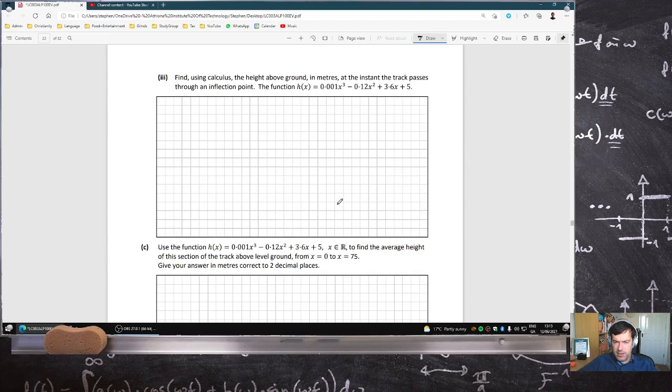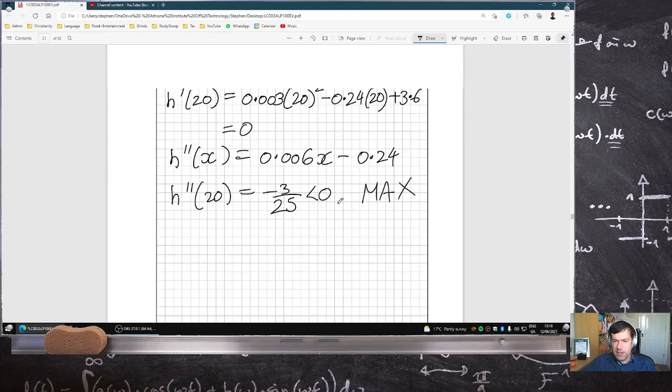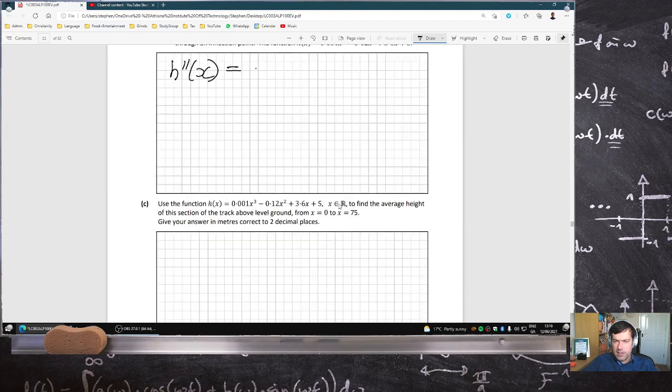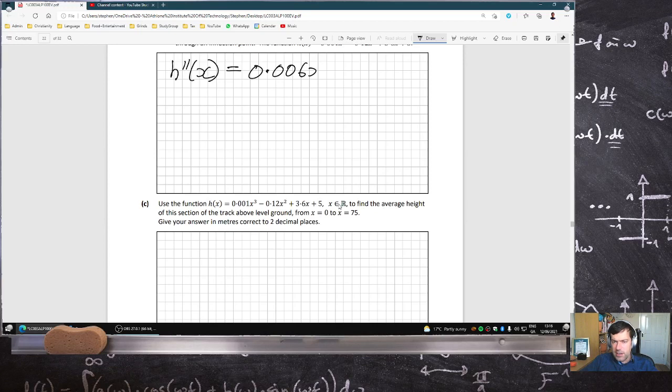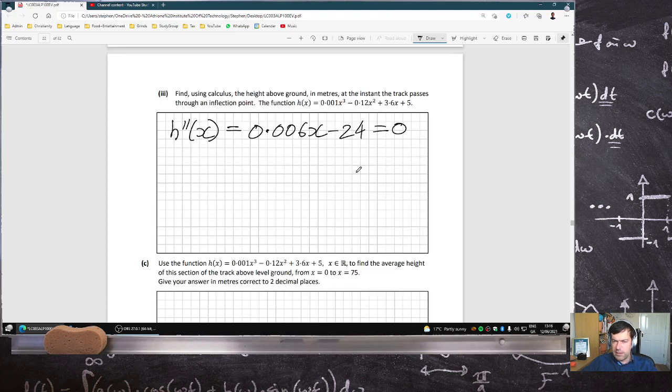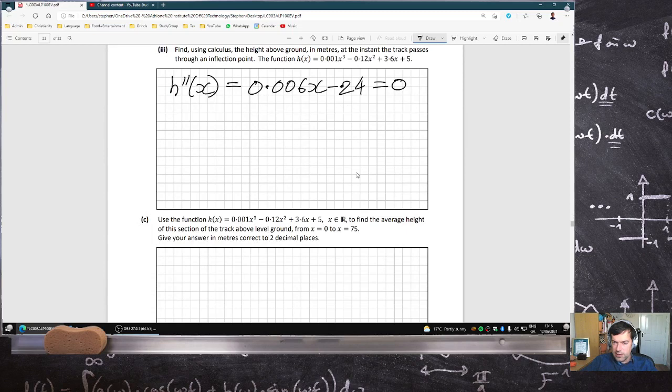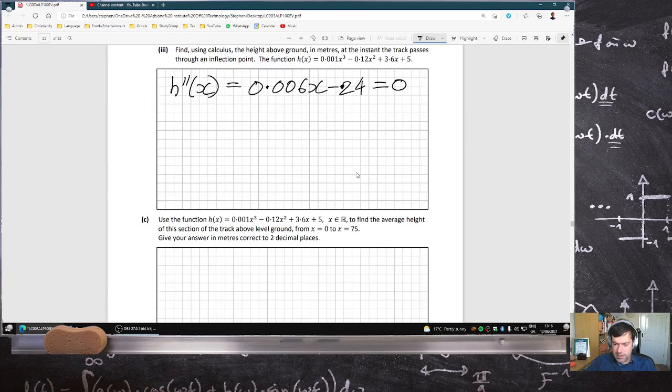We want to find the inflection point. Okay, so I need the second derivative to be zero. Oh, it's not 24, is it? That doesn't seem right. Yeah, 0.24 divided by 0.006. So that means x should be 40.